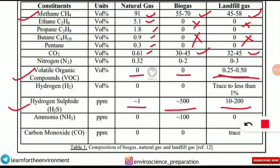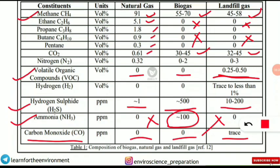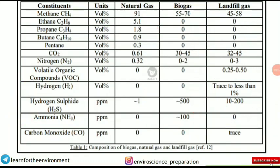Hydrogen sulfide is released at approximately 500 parts per million highest in biogas, between 10 to 200 ppm in landfill gas, and around 1 ppm in natural gas. Ammonia is released in biogas but not in natural gas or landfill gases. Carbon monoxide is released in trace amounts in landfill gases but is close to zero in biogas and natural gas.